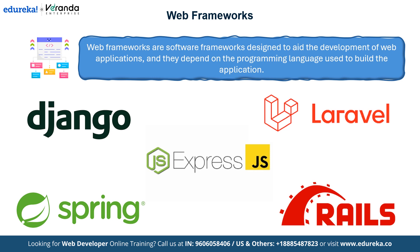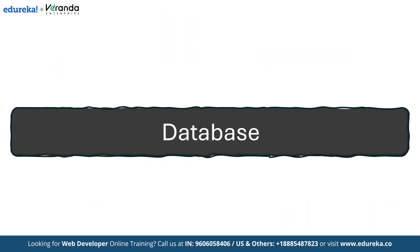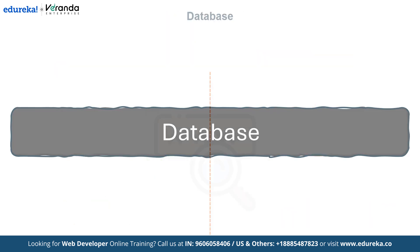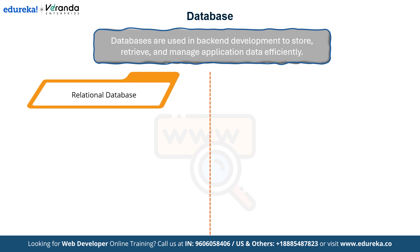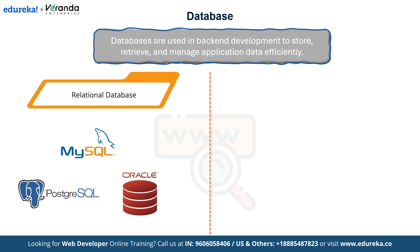Now let's talk about databases, where all the app's data is stored and managed. Databases play a crucial role in storing and managing the data that powers your application. Relational databases organize data into tables with rows and columns, making them perfect for structured data. Examples include MySQL, PostgreSQL and Oracle. If you are looking to master one, MySQL or PostgreSQL stands out due to its flexibility, advanced features and strong community support.